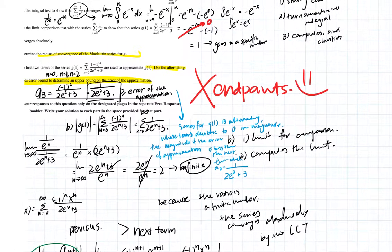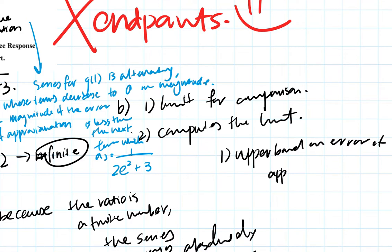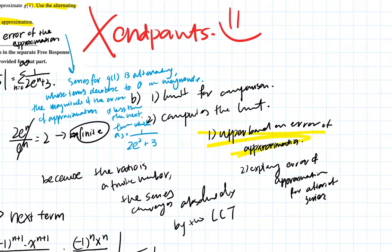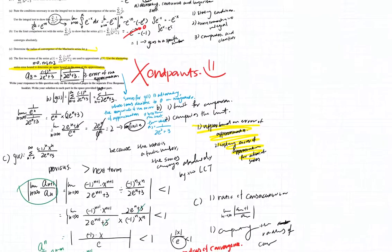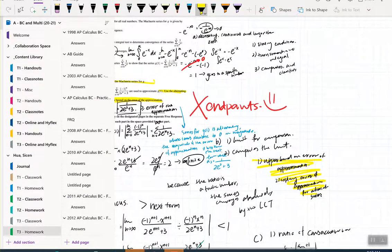The two points distributed for this question are: one for using the upper bound error of approximation correctly, and one for explaining the error bound for alternating series. That's it for today — we worked through a really challenging problem, but it's not as bad as it looks. I hope you have a great day!